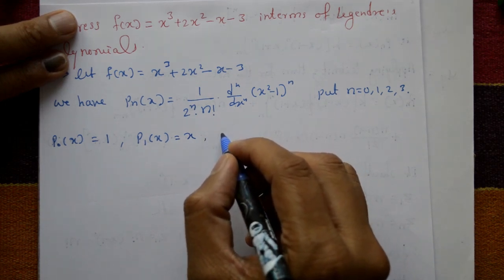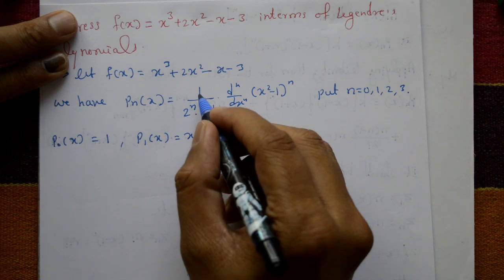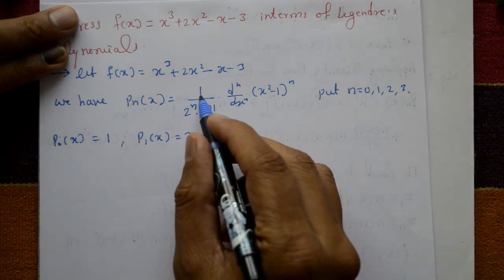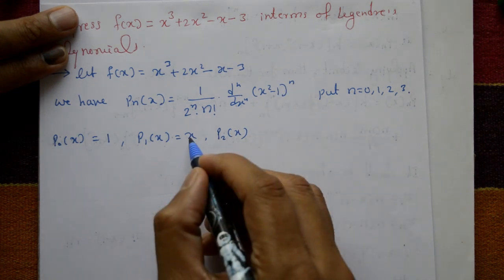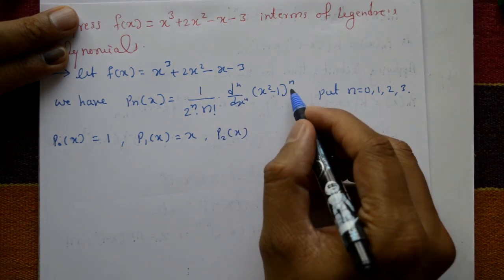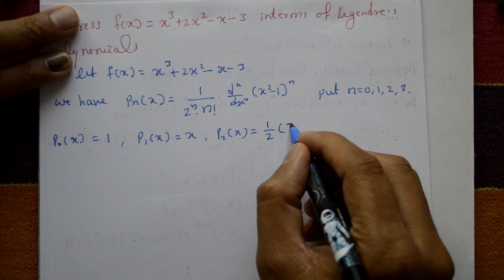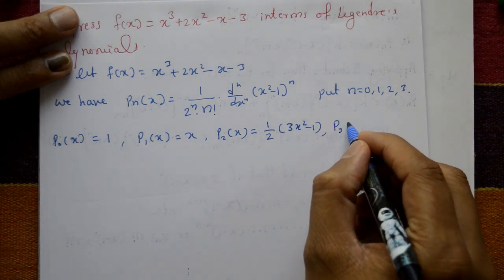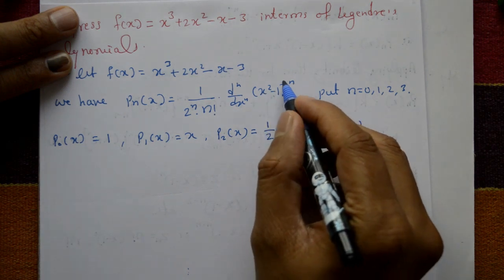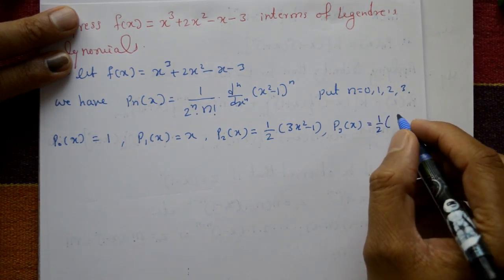For n = 2: P₂(x) = 1/(2² · 2!) · d²/dx² of (x² - 1)², differentiating two times gives P₂(x) = (1/2)(3x² - 1). For n = 3: P₃(x) = 1/(2³ · 3!) · d³/dx³ of (x² - 1)³, differentiating three times gives P₃(x) = (1/2)(5x³ - 3x).